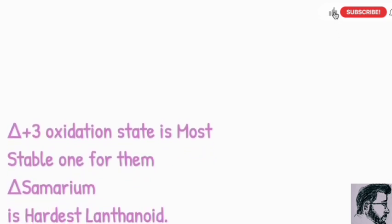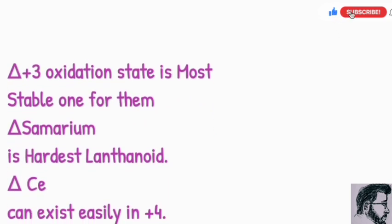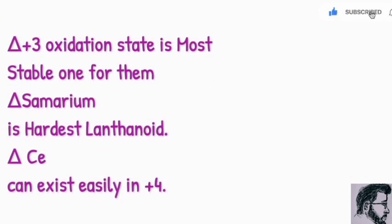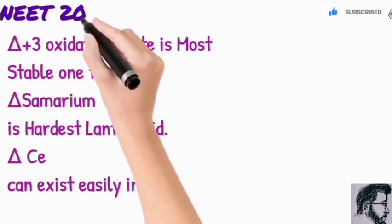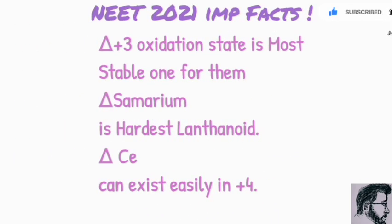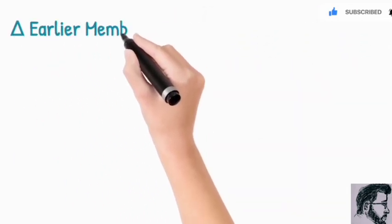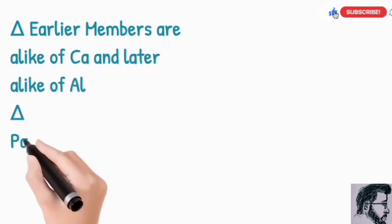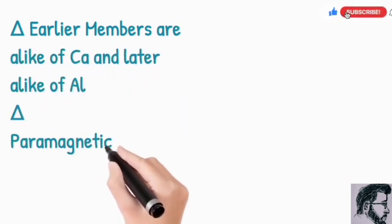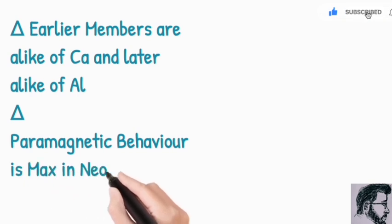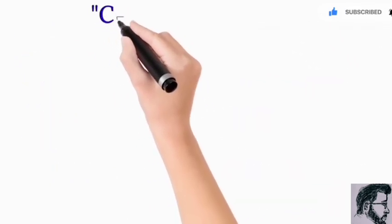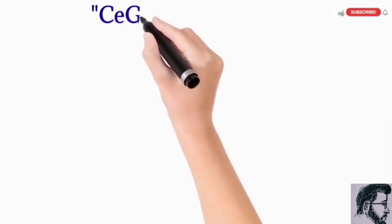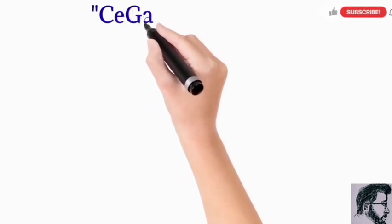Regarding some important factors for lanthanoids that are needed for exams: their most common and most stable oxidation state is +3. Samarium is the hardest among them. Cerium, which is a member, shows a +4 oxidation state easily and frequently. The earlier members behave like calcium, and the later members behave like aluminium. Regarding paramagnetism, neodymium shows the maximum number of unpaired electrons in the outermost shell, making it exhibit maximum paramagnetism.